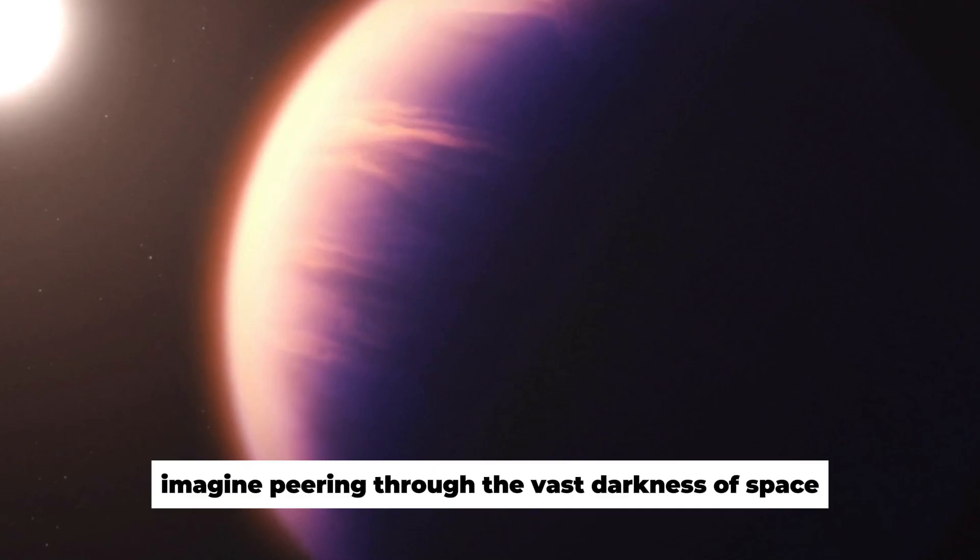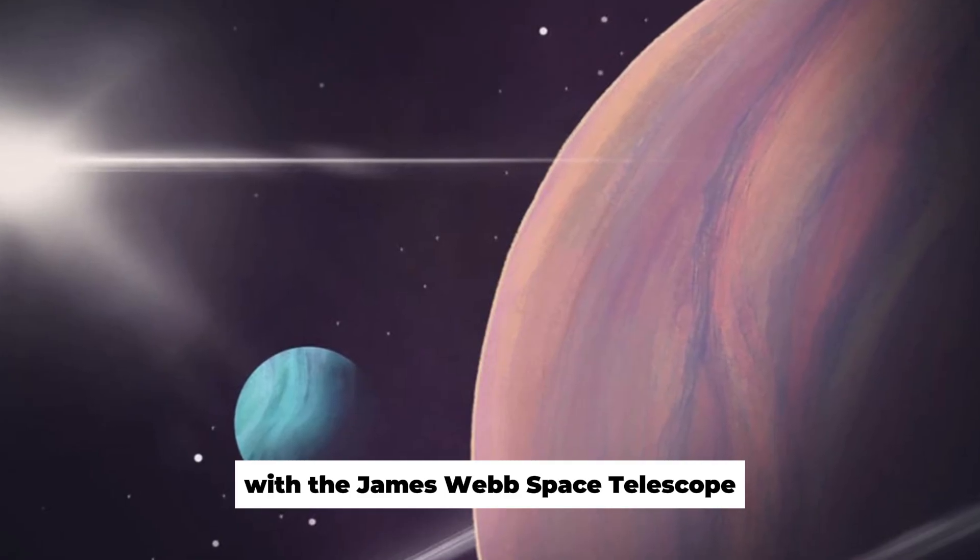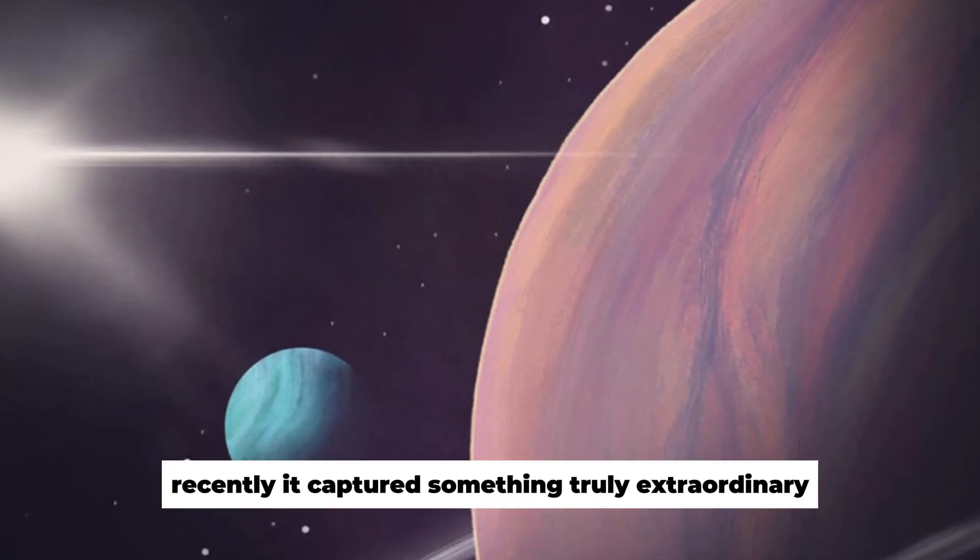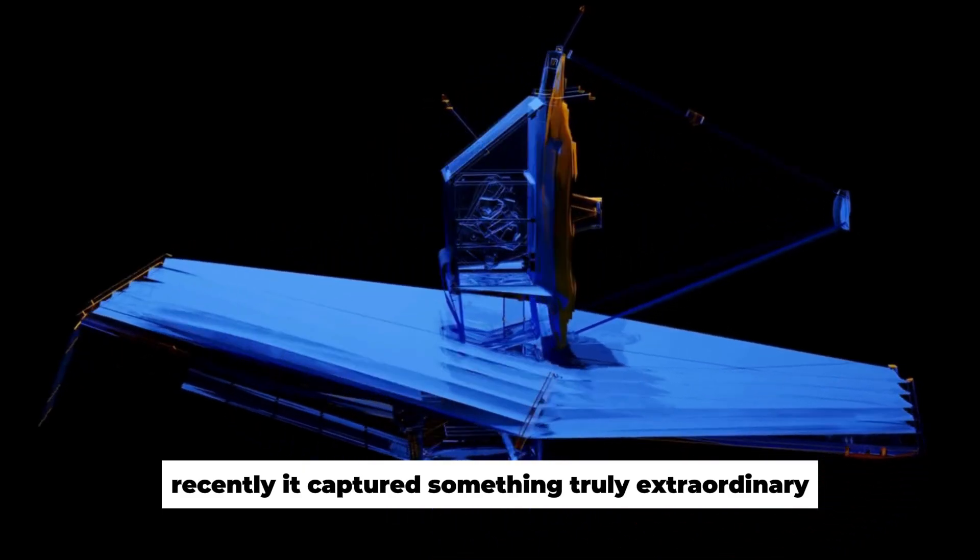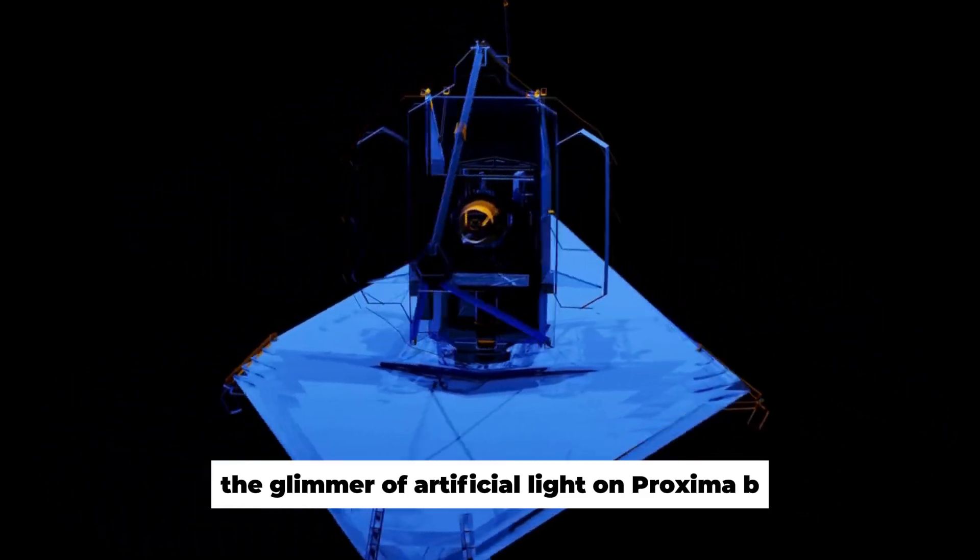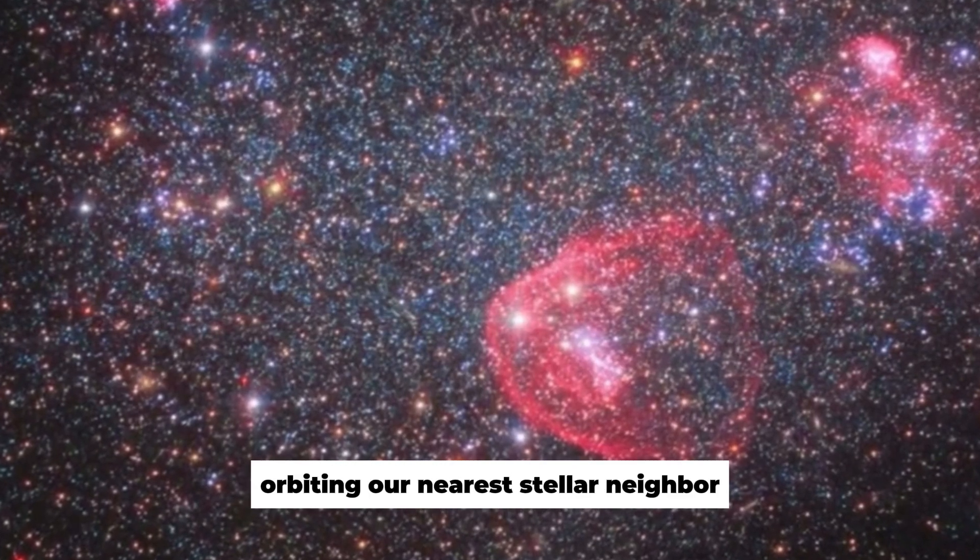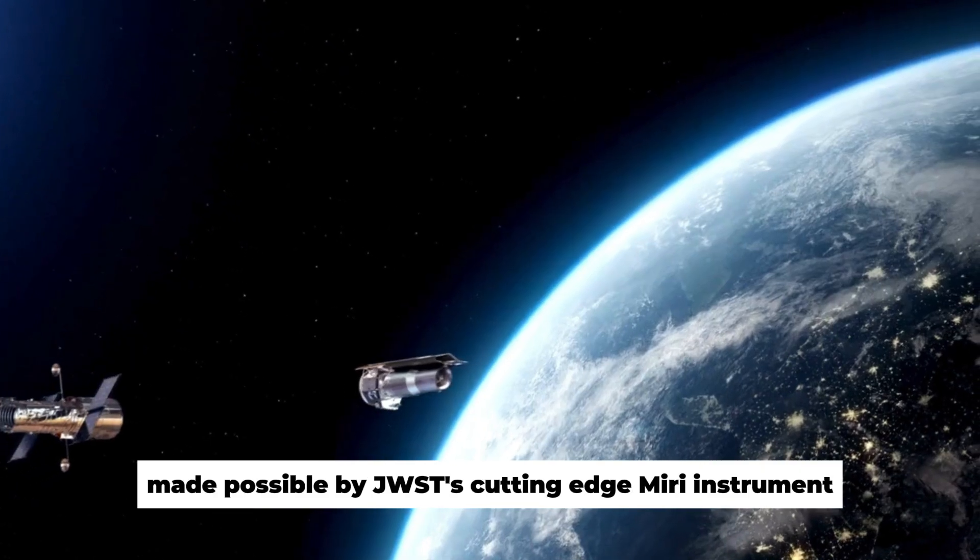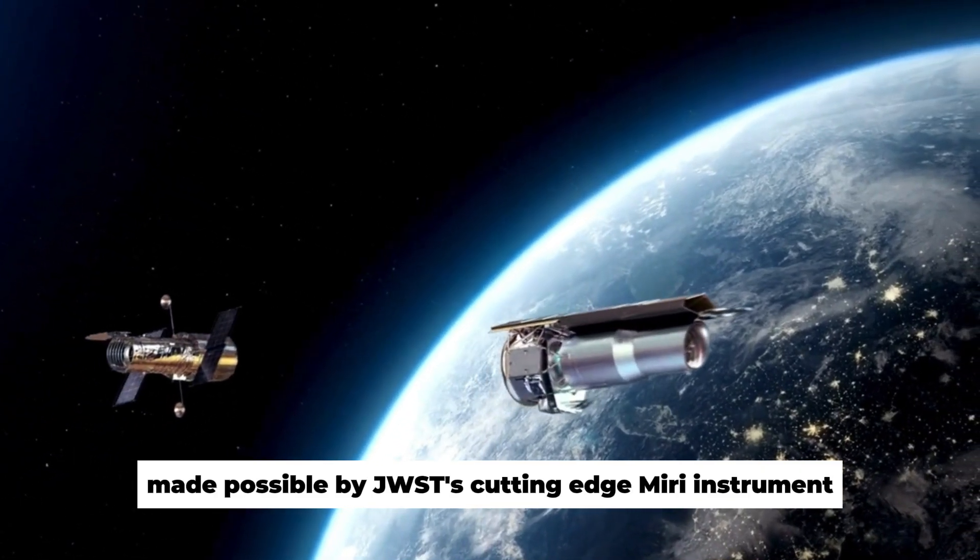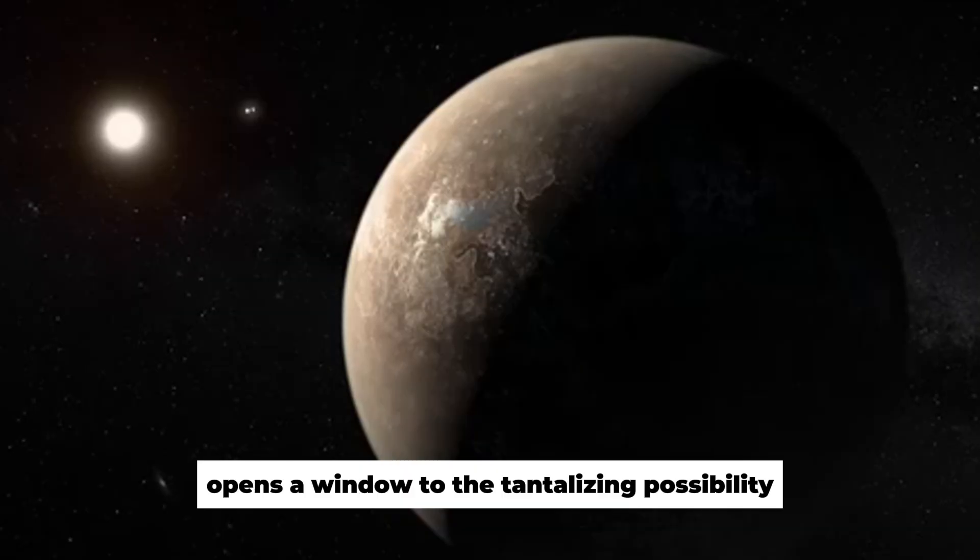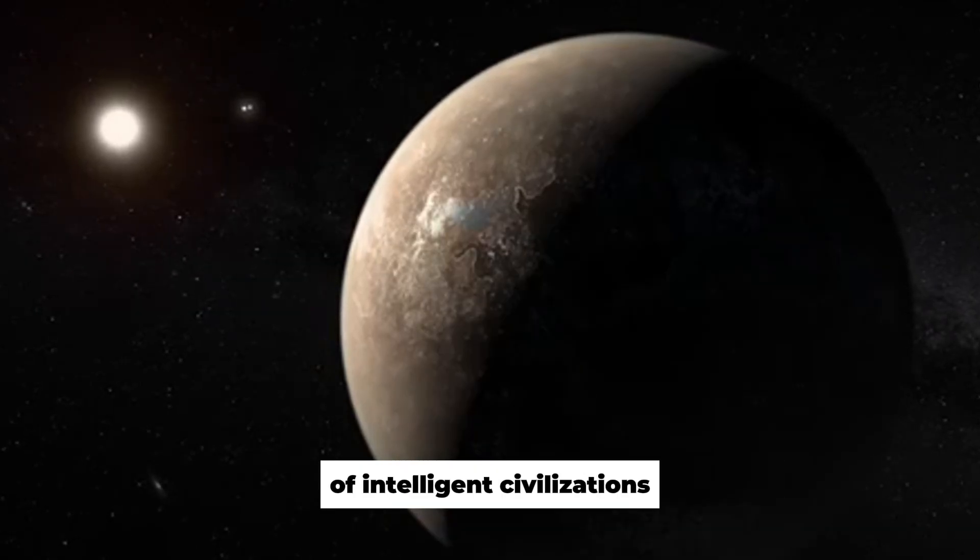Imagine peering through the vast darkness of space with the James Webb Space Telescope, a marvel of modern astronomy. Recently, it captured something truly extraordinary: the glimmer of artificial light on Proxima b, a distant exoplanet orbiting our nearest stellar neighbor, Proxima Centauri. This discovery, made possible by JWST's cutting-edge MIRI instrument, opens a window to the tantalizing possibility of intelligent civilizations beyond Earth.